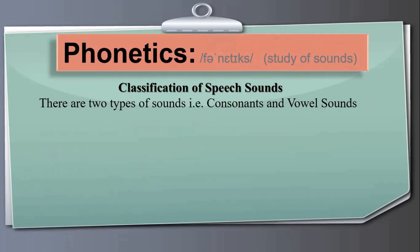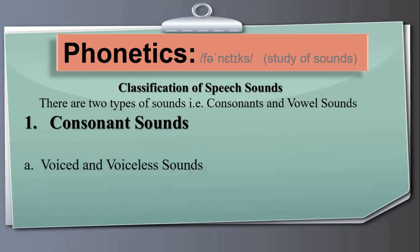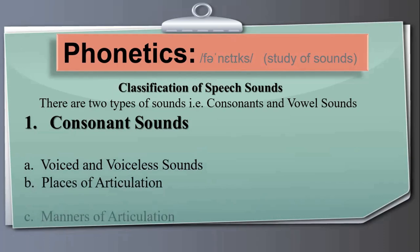There are two types of sounds: number one, consonants, and number two, vowel sounds. Consonant sounds are defined as speech sounds where the airstream from the lungs is either completely blocked or partially blocked. Within consonant sounds we will learn: (a) voiced and voiceless sounds, (b) places of articulation, and (c) manners of articulation.